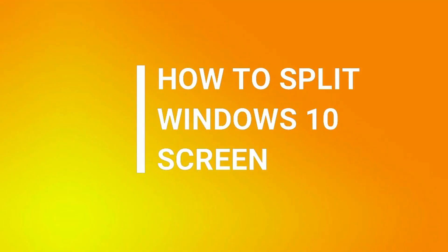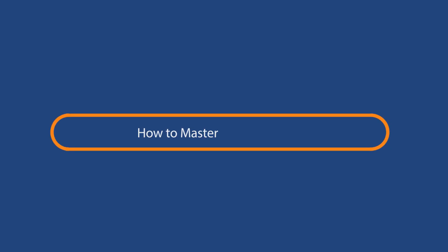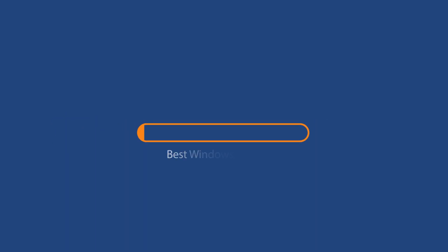Are you thinking about splitting your computer screen to display two or more programs? Windows 10 has a feature called snapping which allows you to snap a program window to the side or corner of your desktop. Welcome to another video tutorial by Windows Chimp.